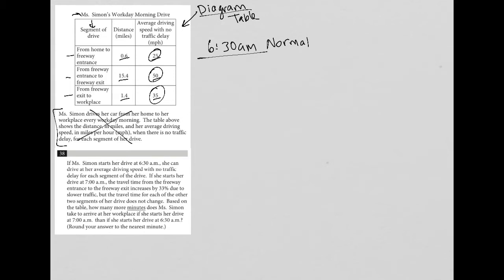If she starts at 7 AM versus 6:30 AM, the travel time from freeway entrance to freeway exit changes. I'll call that phase two.